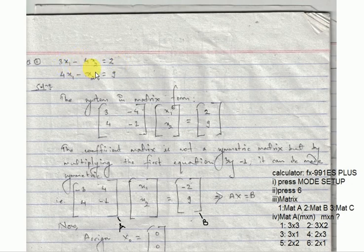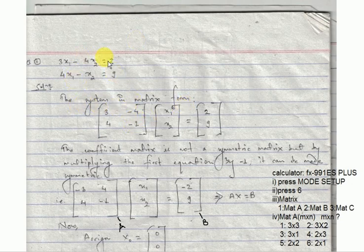The system of equations is: 3x1 minus 4x2 equals 2, and 4x1 minus x2 equals 9. There are two variables. We will express this using the matrix formula.